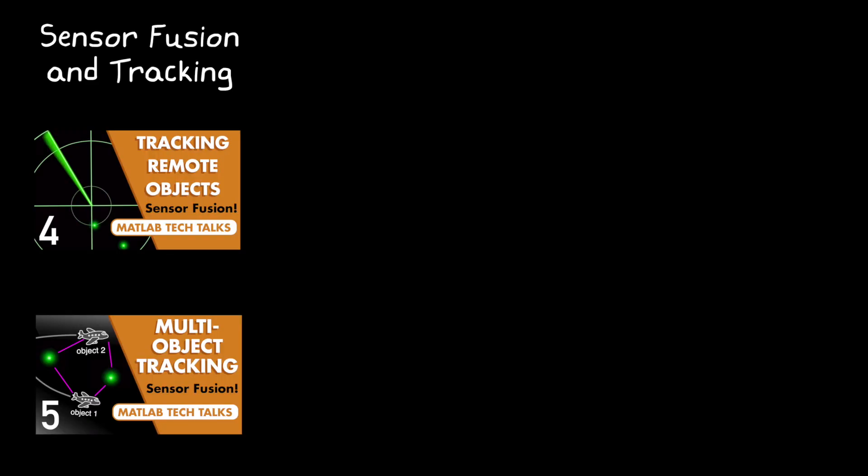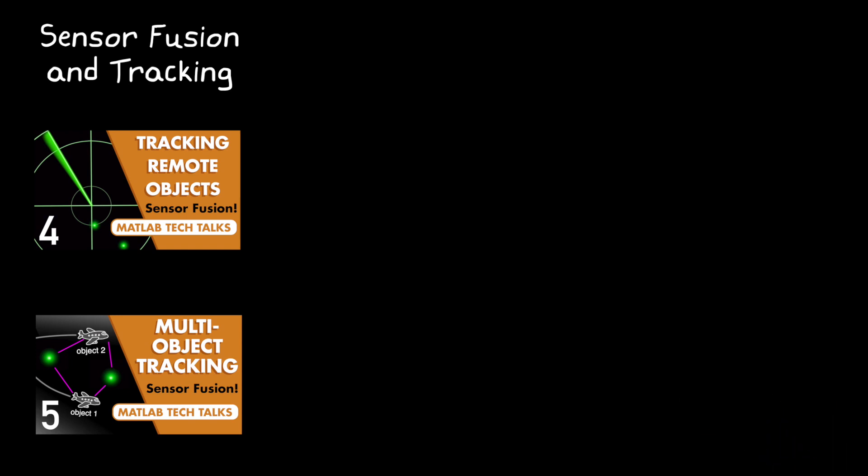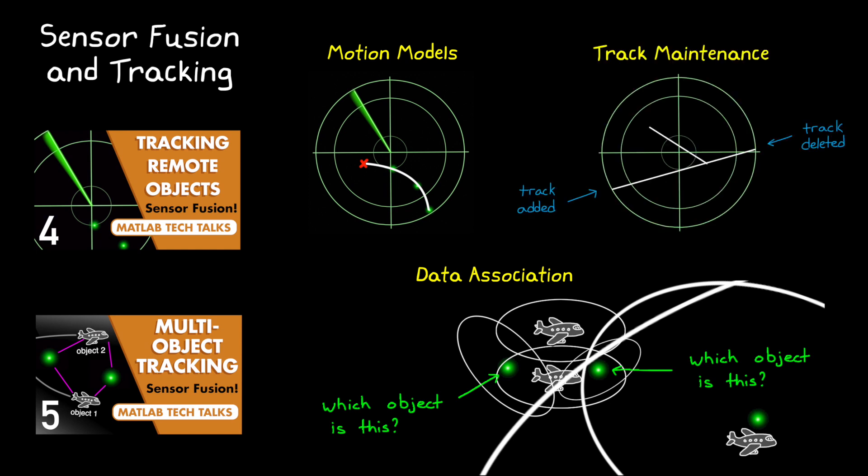Now, we've already discussed how to track a single object and multiple objects in the sensor fusion and tracking series, which I've linked to below. And I'm biased, but I think it's worth watching because we're going to build on that knowledge here. In that series, we talked about how tracking a remote object requires us to find the correct model that describes the object's motion, how uncertainty in the system makes it difficult to associate the right measurement to the right object, and how to add and subtract tracks as objects enter and leave the local environment.